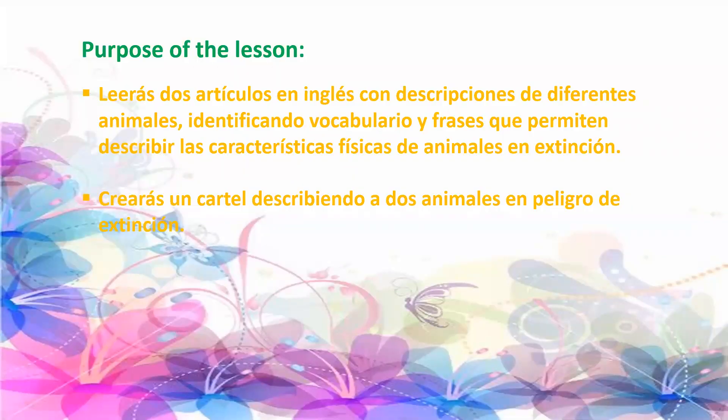Purpose of the lesson: leerás dos artículos en inglés con descripciones de diferentes animales, identificando vocabulario y frases que permiten describir las características físicas de animales en extinción. Vamos a leer esos dos artículos en inglés con las descripciones de los diferentes animales. Y lo que ustedes van a hacer, el do it yourself: crearás un cartel describiendo a dos animales en peligro de extinción. Tienes que ver toda la clase que vamos a hacer ahora para que puedas hacerlo.